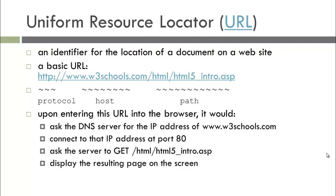The address system we use is called a URL, or Uniform Resource Locator. This is what we type into the browser to go to a particular address, and it is composed of the protocol, the host, and the path. For a given URL, we know it is for the web because it uses HTTP, and it goes to the host, such as www.w3schools.com, and then to a particular path on that server.